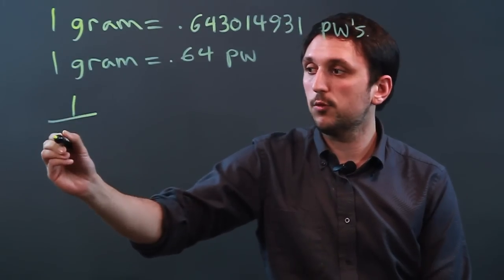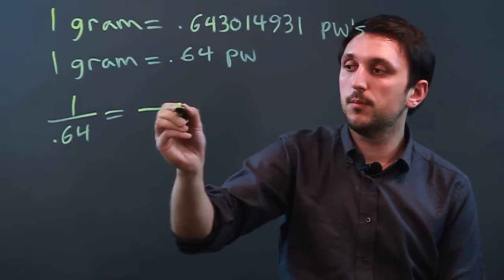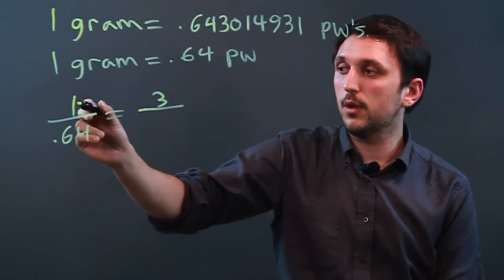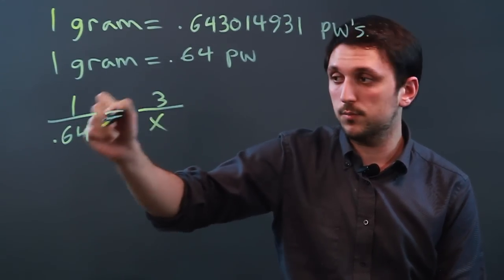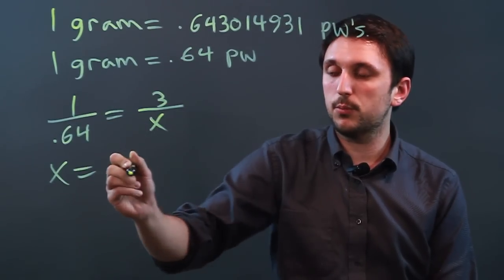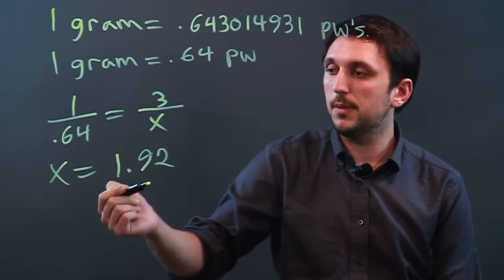So we say 1 is to 0.64 as, well, let's say we want to figure out how many penny weights are in 3 grams. Say 1 is to 0.64 as 3 is to x, and then you cross multiply. So x times 1 equals 3 times 0.64, which is 1.92 penny weights.